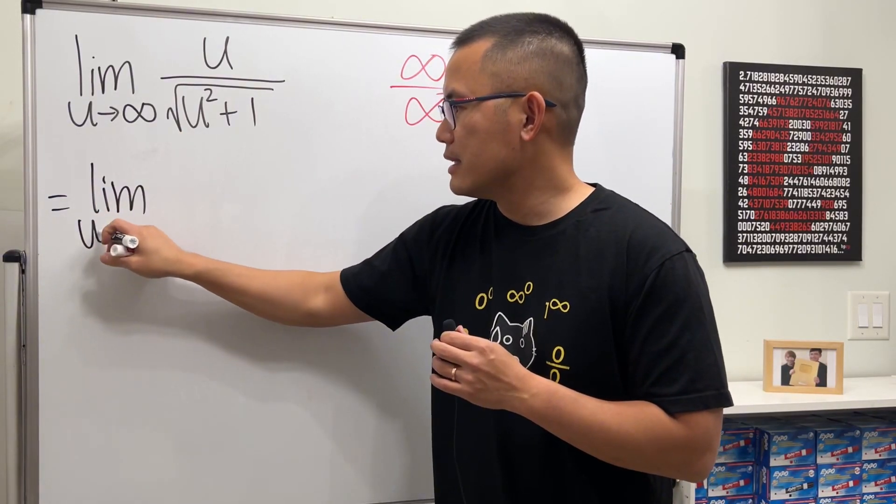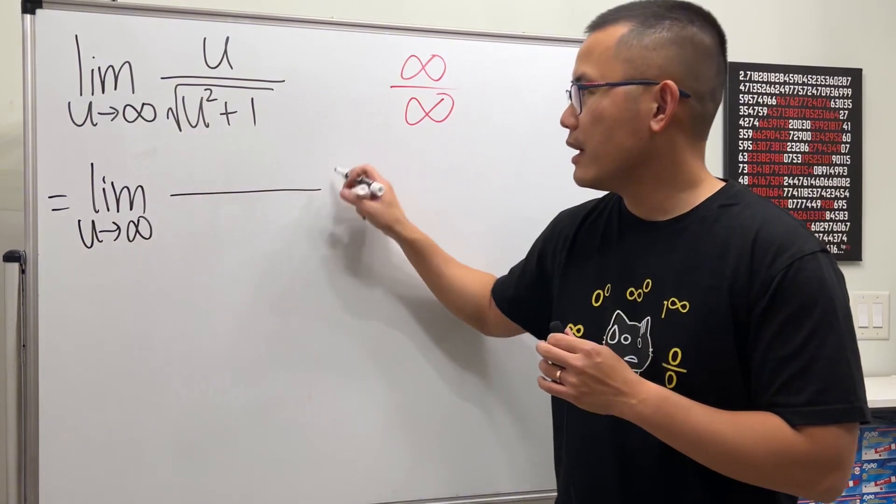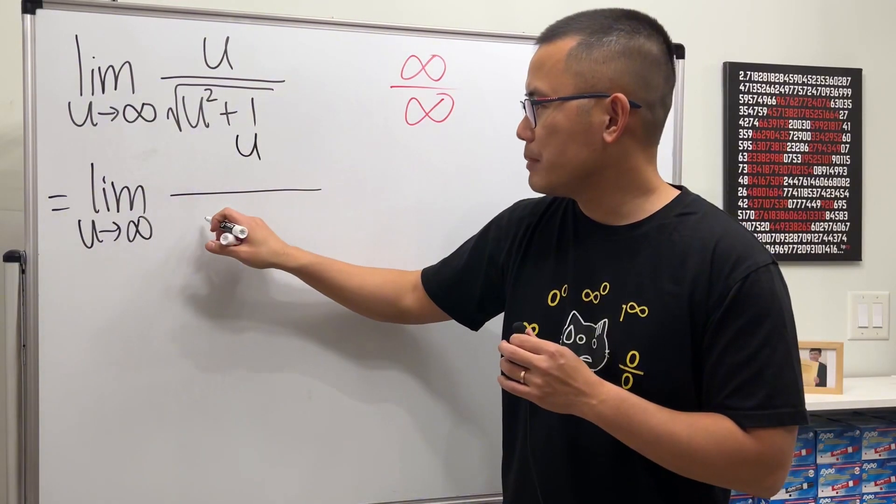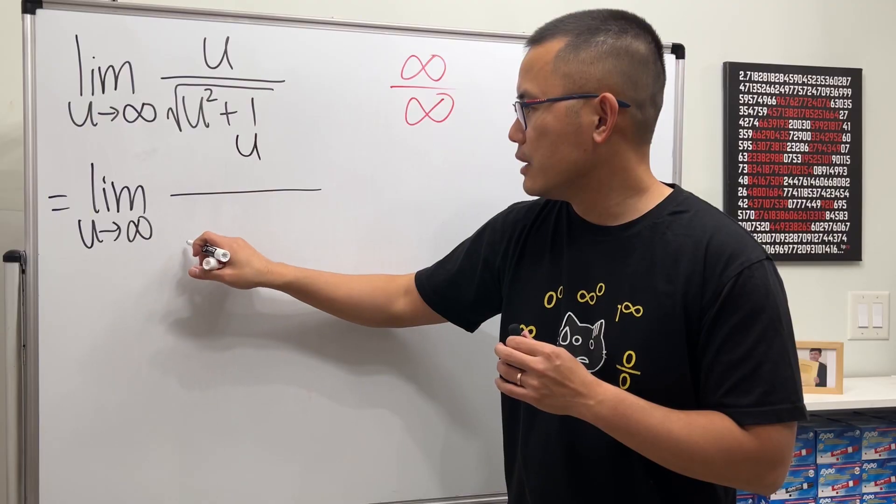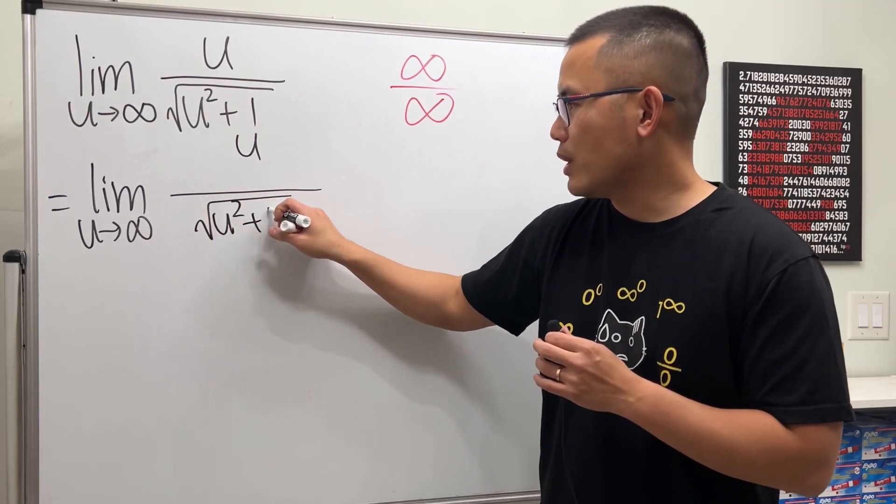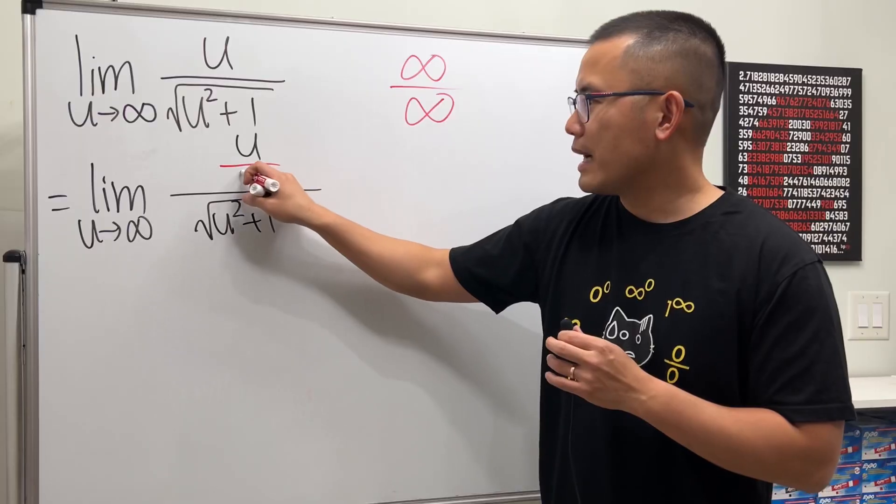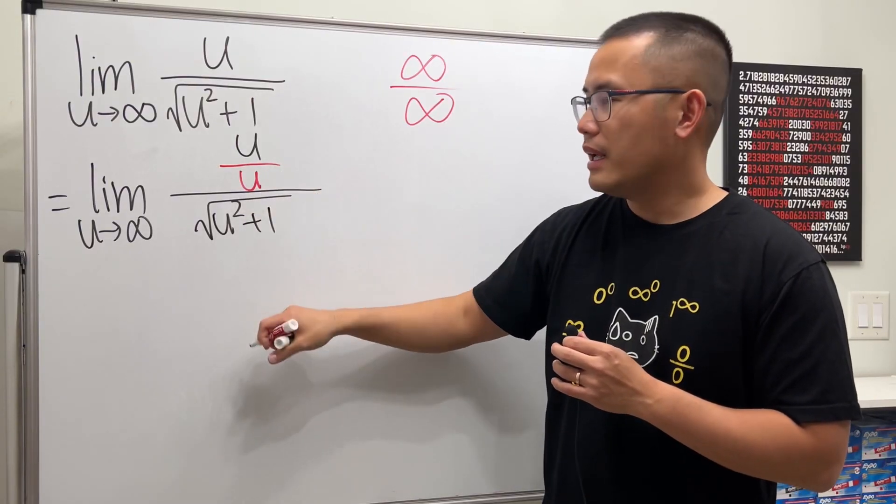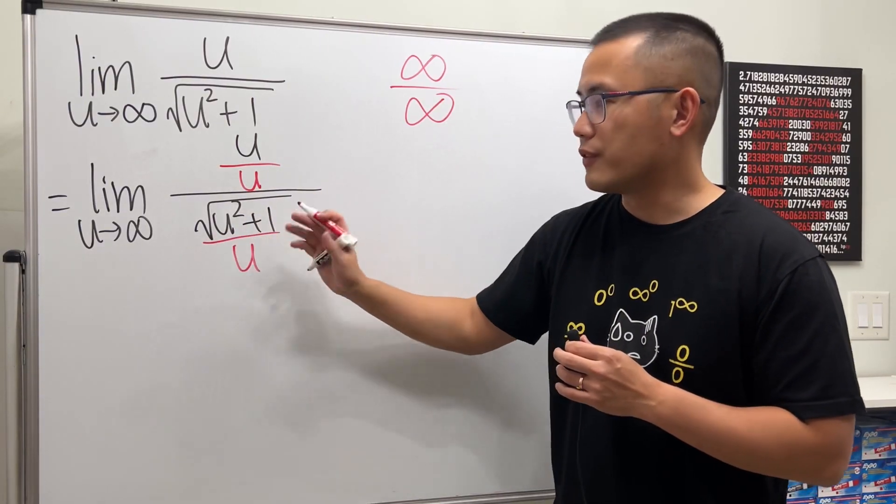This is the limit as u going to infinity. On the top we have the u. On the bottom we have the square root of u squared plus 1. I will divide the top by u to the first power, and I will also divide the bottom by u to the first power.